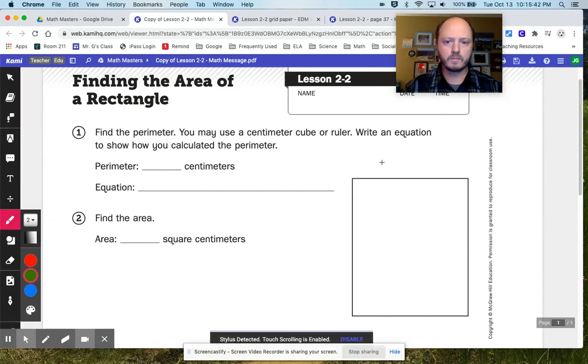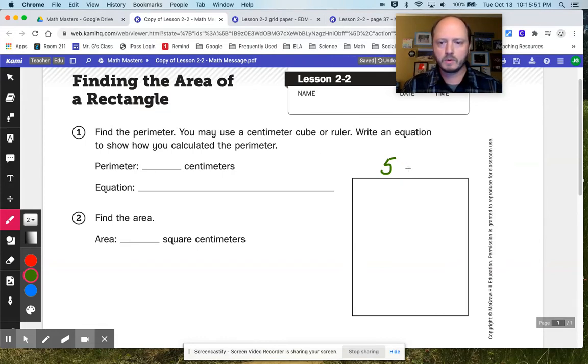So I'm going to measure right on the screen, and we have a five centimeters for the width, and six centimeters for the length. All right, so with that knowledge, you should be able to figure out the perimeter.